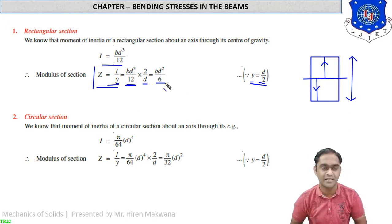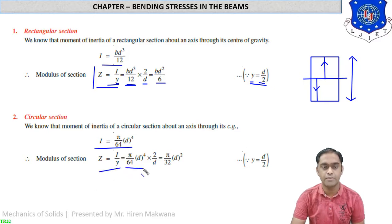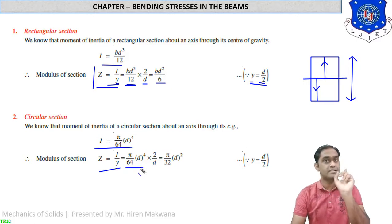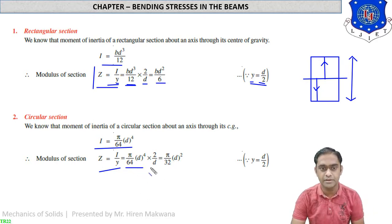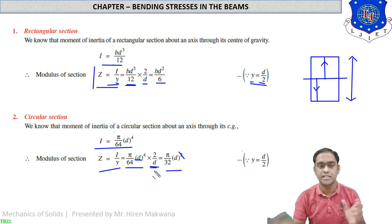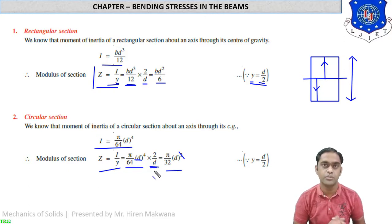For the circular section, the moment of inertia is I = π/64 × d⁴. Z = I/Y, where Y equals the radius d/2 from the center. Substituting: Z = (π/64 × d⁴) / (d/2) = π/32 × d³. Note: there is a printing mistake in the slides — it should be d³, not d². So section modulus for circular section is π/32 × d³, and for rectangular section is bd²/6.